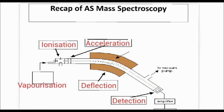Once you've deflected the ions, they then travel down towards the detector at the end. Detection is the last stage in mass spectroscopy. At that point, a current is generated, and that current is proportional to the abundance of the ion that is detected.